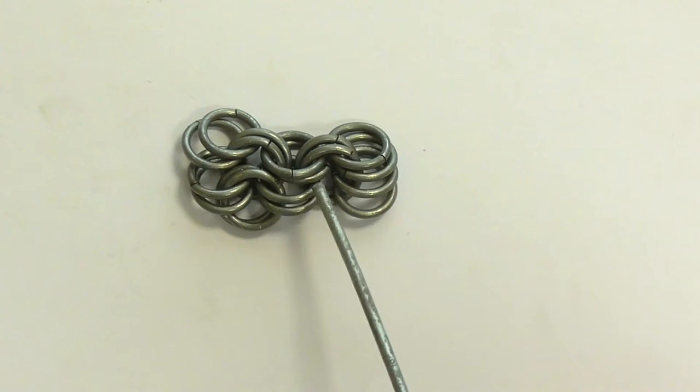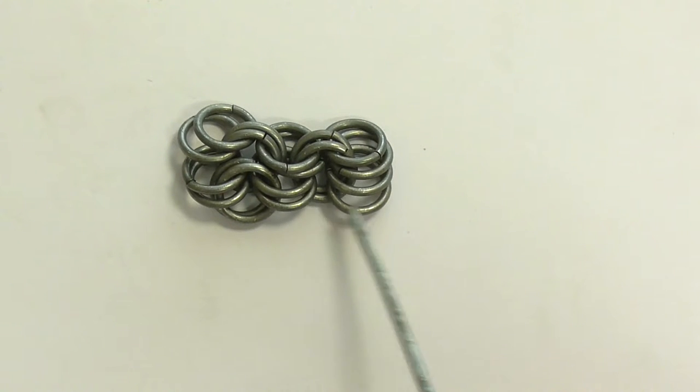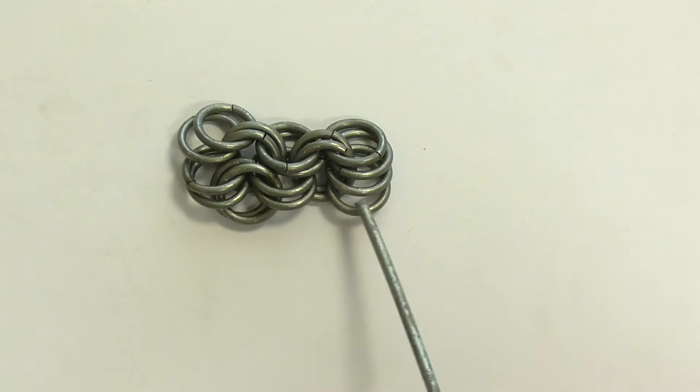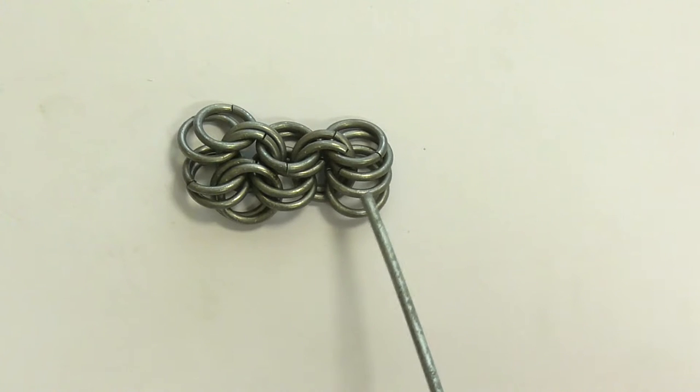The same operation should be done here. Two more rings through these four rings. This one, this one, this one and this one.